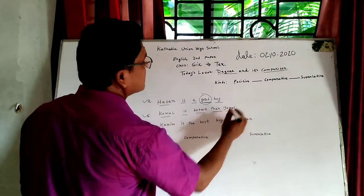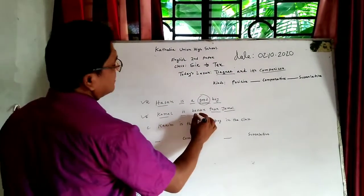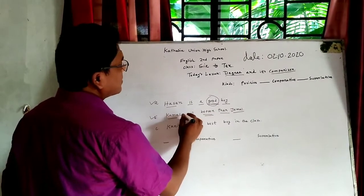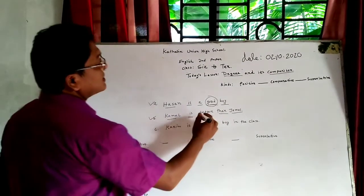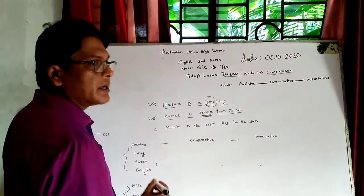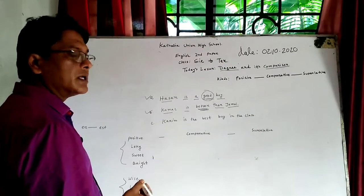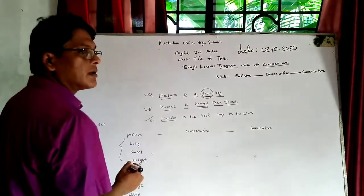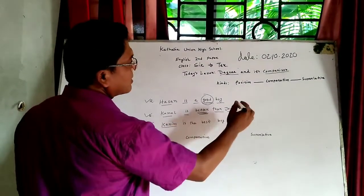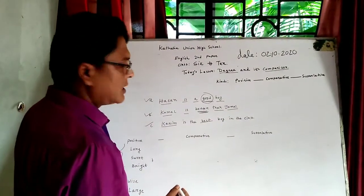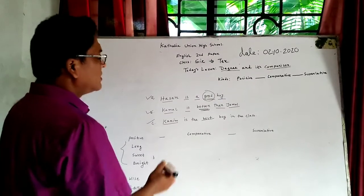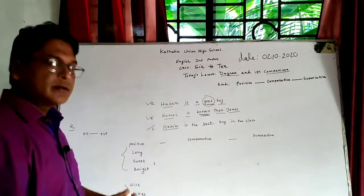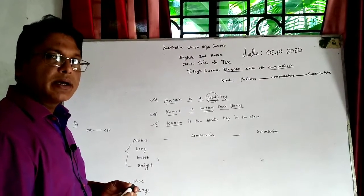On the other hand, 'Kamal is better than Jamal.' Here, 'better' is also a degree, but it is comparative degree because Kamal is compared with Jamal. Comparative degree compares two nouns or pronouns. Next, 'Karim is the best boy in the class.' Here, Karim is compared with all the boys in the class. So 'best' is superlative degree. You can understand what is positive degree, comparative degree, and superlative degree.